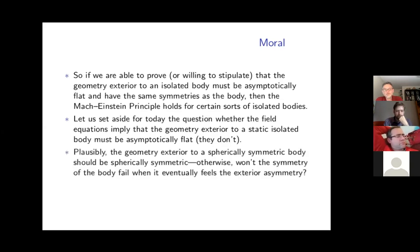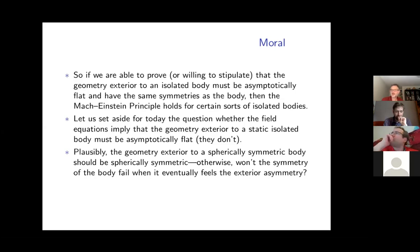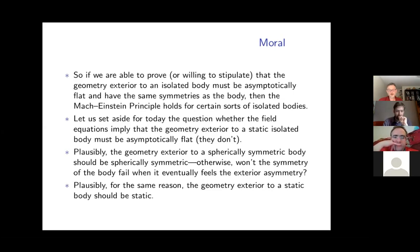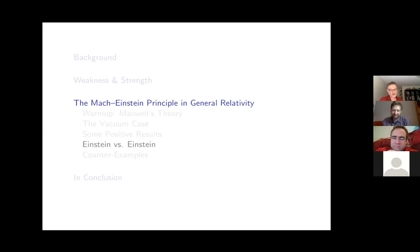Let's focus on the symmetries. Here's a thought: plausibly, the geometry exterior to a spherically symmetric body should be spherically symmetric — otherwise wouldn't the body eventually feel the lack of symmetry in the exterior geometry? And plausibly for the same reason, the geometry exterior to a static body should be static. If we know the body is static, sits there forever, it seems like the exterior geometry has to be static because otherwise wouldn't the body feel it? I should get to some counterexamples in a minute, but experience has taught me that in person people get very restless during this section because there's something they really want to say about how general relativity works.